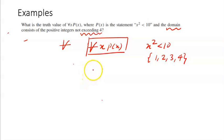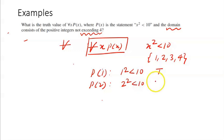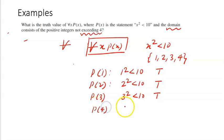To check the truth value, we evaluate p(x) at each domain value. p(1): 1² < 10 is certainly true. p(2): 2² < 10 is also true. p(3): 3² < 10 is also true. But p(4): 4² < 10 is not true, because 4² is 16, and 16 is certainly greater than 10.